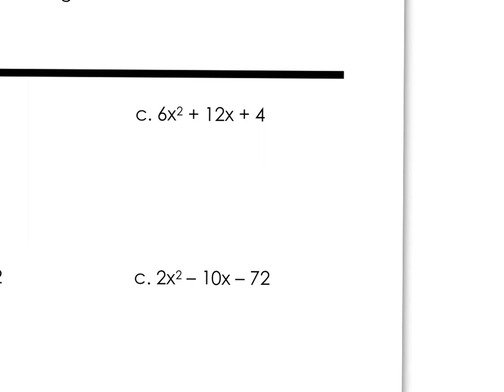In our last example, we have three terms this time: 6x² + 12x + 4. This would be a quadratic expression in standard form, like we talked about in the first part of chapter 4.